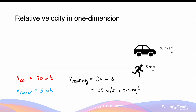In other words, from the perspective of the runner who is going in the same direction as the car, the car will appear to be slower, travelling at 25 meters per second to the right.